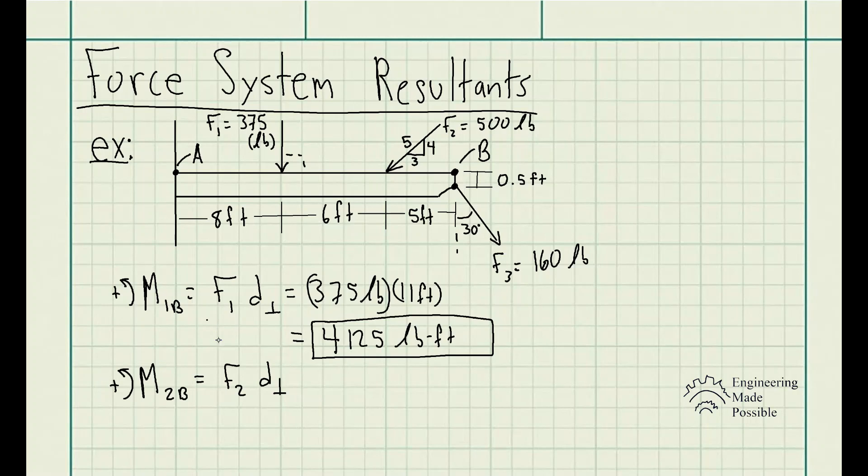Now for force 2, the moment caused by force 2 with respect to B is equal to the force times the distance that's perpendicular to that force. But keep in mind, this force is at an angle. So we have the Y component of that, and we also have an X component. Now the X component, if you can imagine, is basically just pulling along this point. It's not going to cause any rotation, so the X component of force 2 is not going to cause a moment, only the Y component.